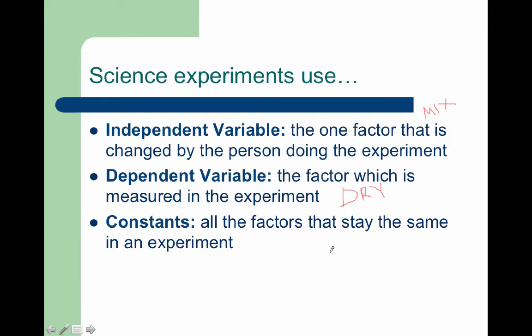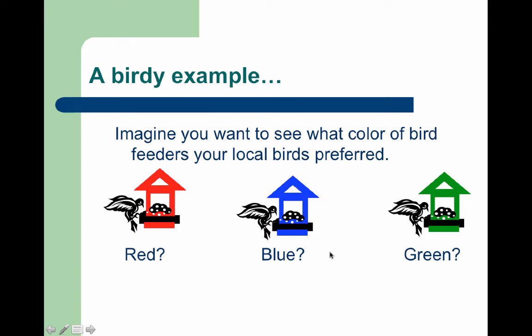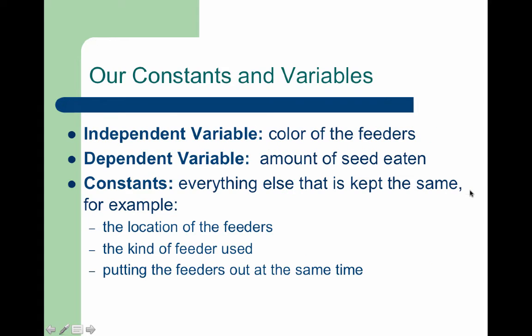Our constants are just those things that stay the same. Here's an example: if a student wanted to determine whether feeder color had an effect, he might hypothesize that if he puts up a red, a blue, and a green feeder, birds will visit the green feeder more — perhaps because the green feeder is the most camouflaged or natural color.